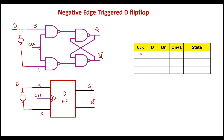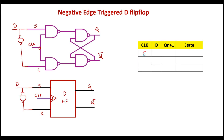Now let me write the truth table. When clock is 0, irrespective of D input, Qn+1 will be equal to Qn — that is no change. When the clock signal is at a negative edge — represented by a down arrow — if D input is 0, Qn+1 will be 0 and the flip-flop is reset. When D input is 1, Q value will be 1 — flip-flop will be set. Symbolically, the negative edge is represented by a circle with a cap mark. This is the truth table for negative edge triggered D flip-flop.